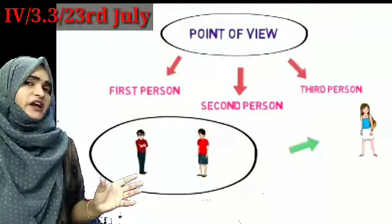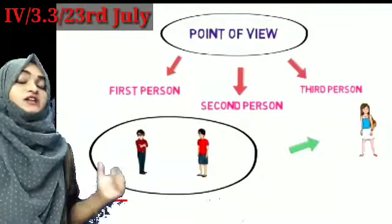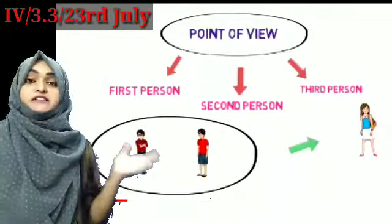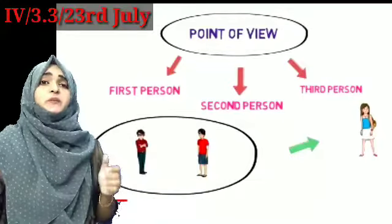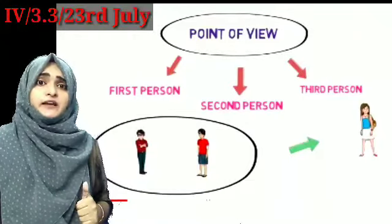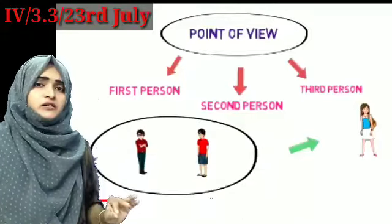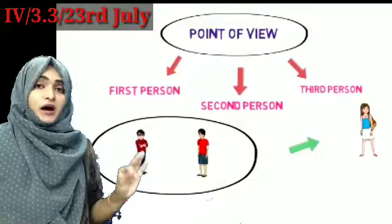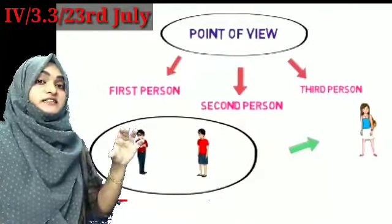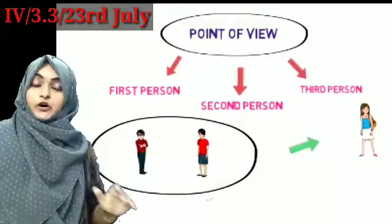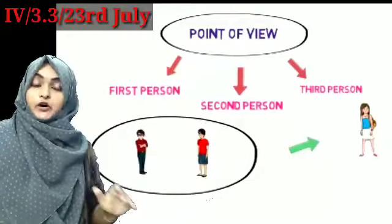What did Ram tell Shyam about Meera? Ram is telling Shyam: 'Hey Shyam, I want to tell you something. Have you heard about Meera? She is a very smart girl.' This is the sentence Ram told to Shyam. So I think first person, second person, and third person is clear for you.